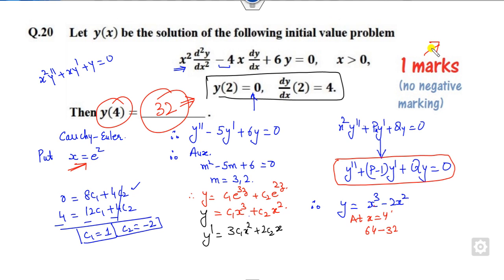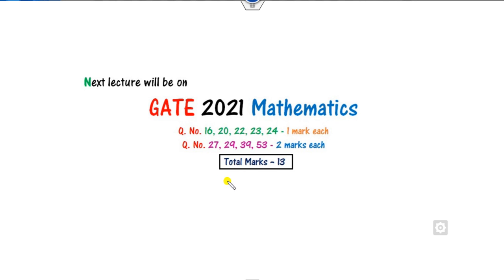We will see in our next class how to solve other questions related to one marks and two marks. I have mentioned nine questions totaling 13 marks. We will cover these within one to one and a half minutes each for your practice, so you can get 13 marks easily in your next competition exam.